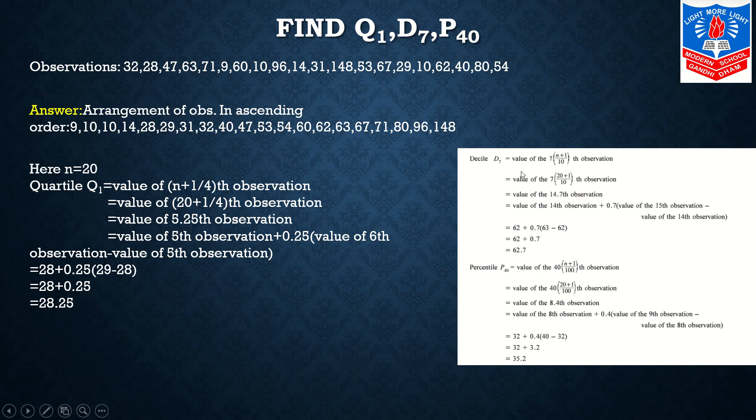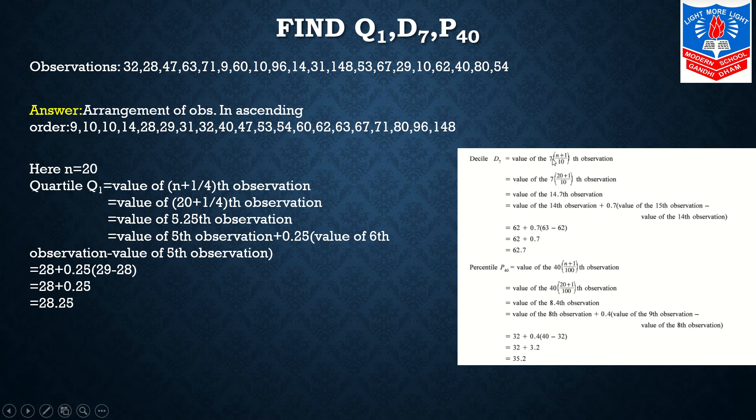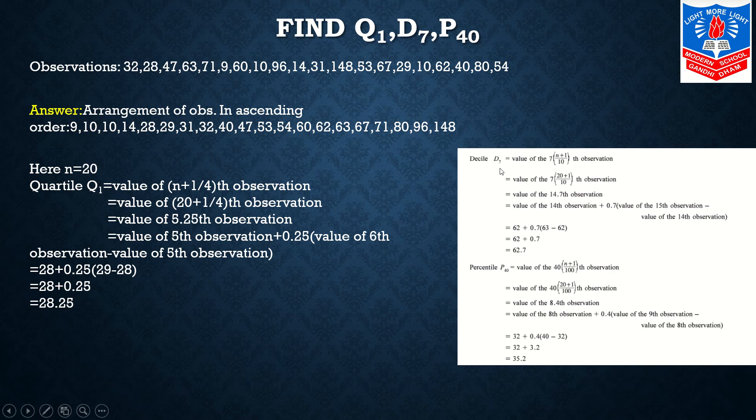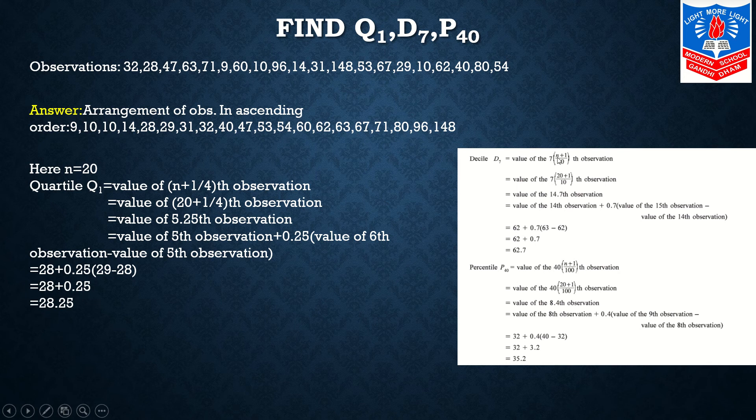Now students, if you are able to understand Q1, you will be able to solve D7 and P40 easily. So D7 is asked. Value of 7(N+1)/10th observation. If D4 was asked, we would write 4 instead of 7. Deciles divide into 10 parts, so we write 10 in the denominator.